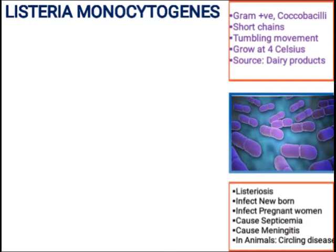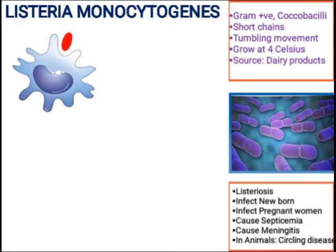Now let us talk about the virulence factors of Listeria monocytogenes. As you know, whenever any bacteria or foreign particle enters the body, our immune cells go to the bacteria and engulf them. In this condition, when Listeria monocytogenes enters our body, our immune cells — macrophages, neutrophils, and other immune cells — go and engulf them in a process we call phagocytosis.